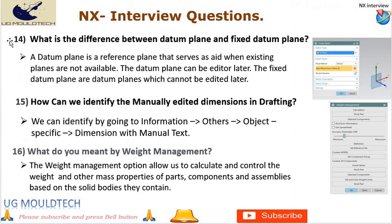Next point in UG NX interview is number 14. What is the difference between datum plane and fixed datum plane? A datum plane is a reference plane that serves as an aid when existing planes are not available, and it can be edited later. Fixed datum planes are datum planes which cannot be edited later. A fixed datum plane is typically used in conjunction with other fixed datum features, such as fixed datum points or fixed datum axis, to establish a complete reference system for the design. Next point is number 15. How can we identify the manually edited dimensions in drafting? We can identify them by going to Information > Others > Object Specific > Dimension with Manual Text.